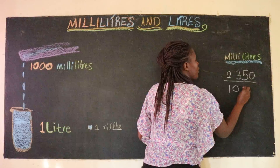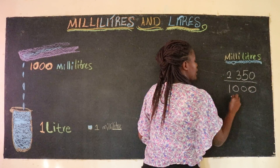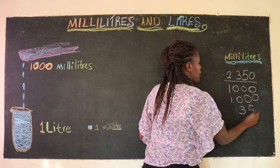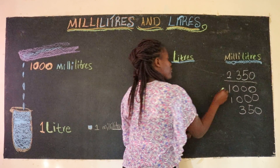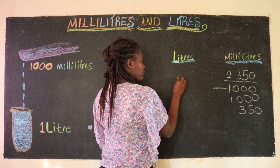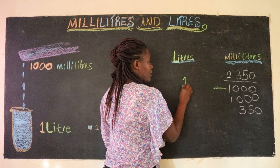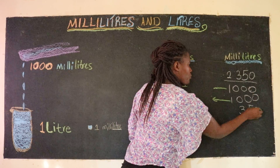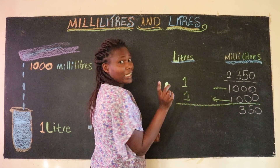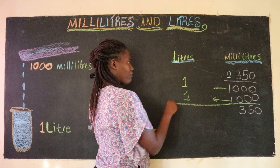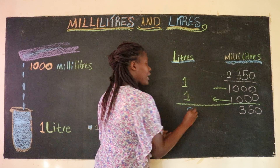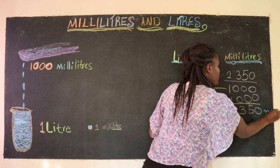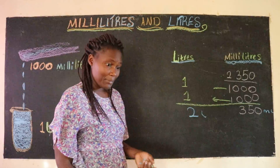2,350 equals 1,000 plus another 1,350. Every thousand will become one liter. This 350 is not yet a thousand, so we leave it as milliliters. So we have one, two — we already have two liters and three hundred and fifty milliliters. As simple as that.